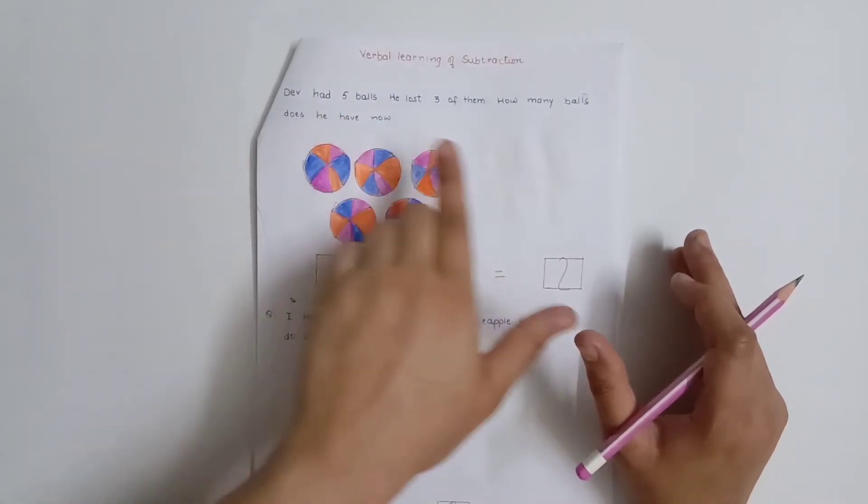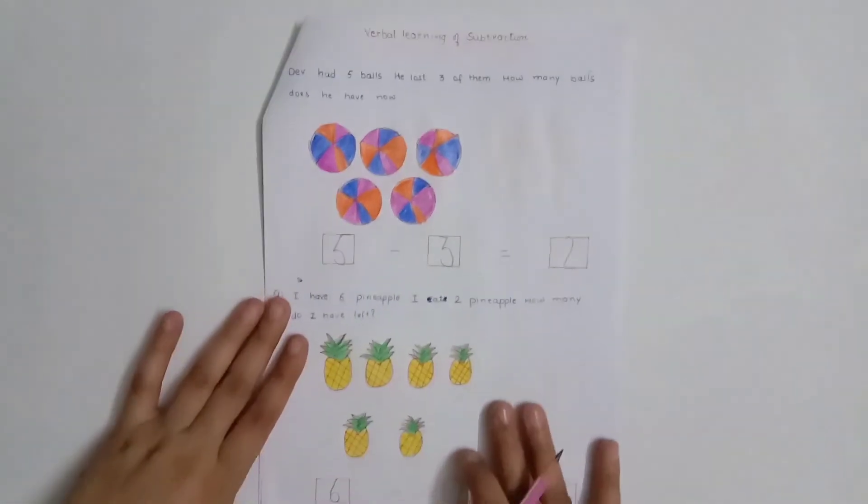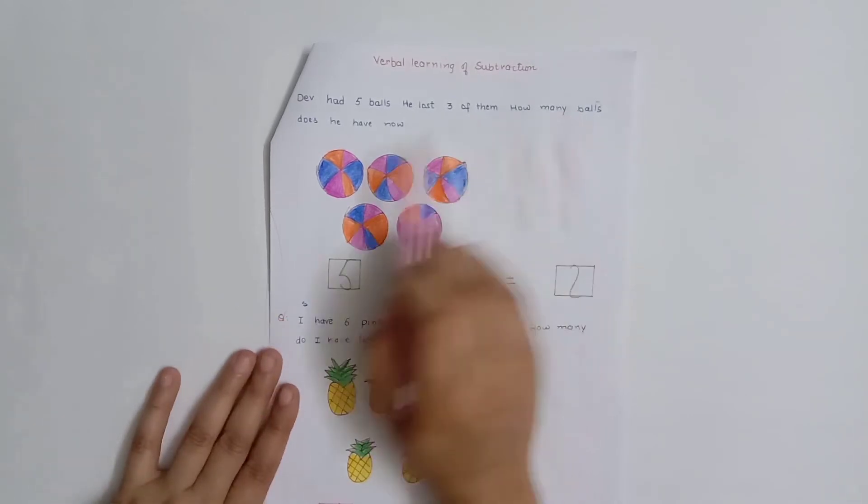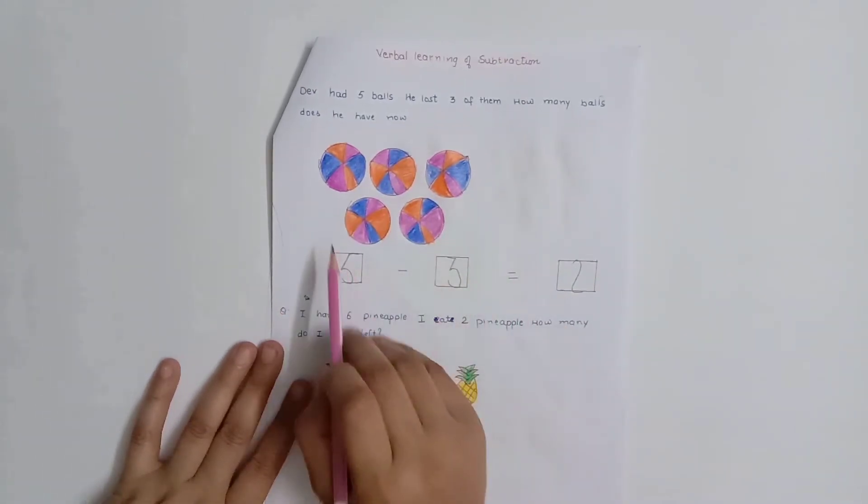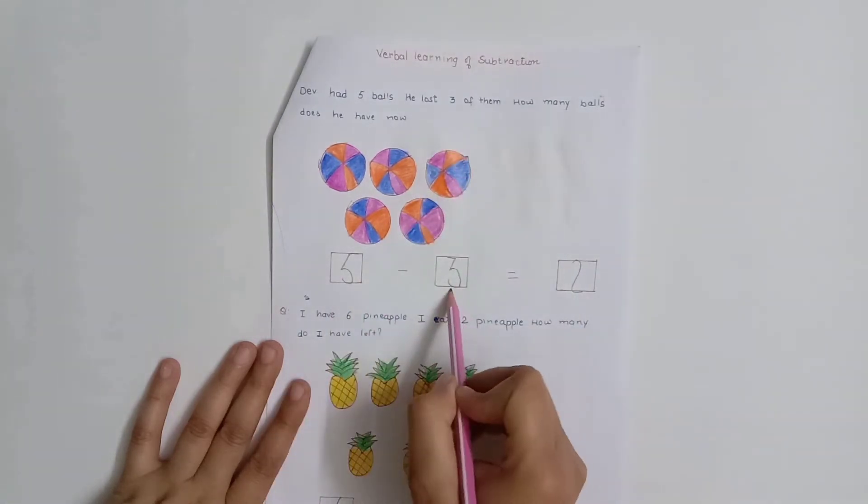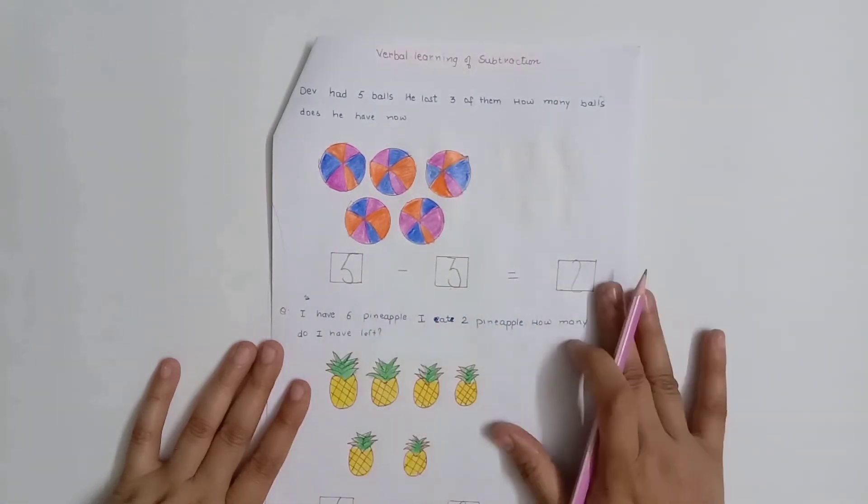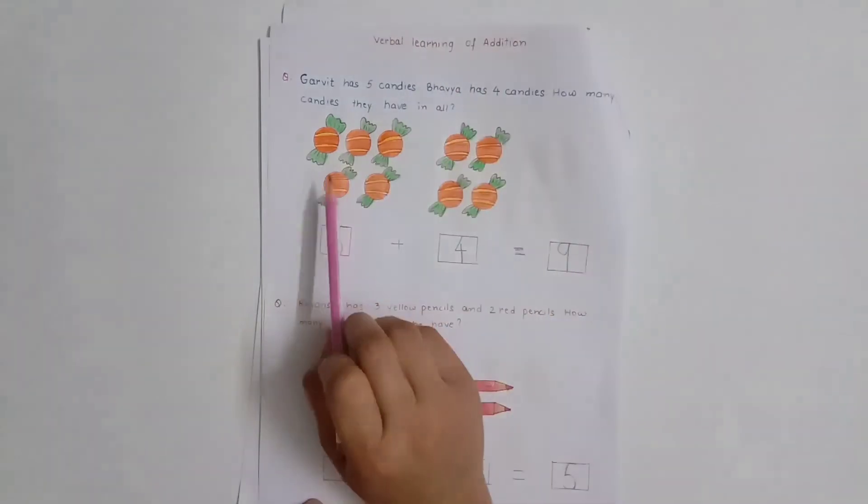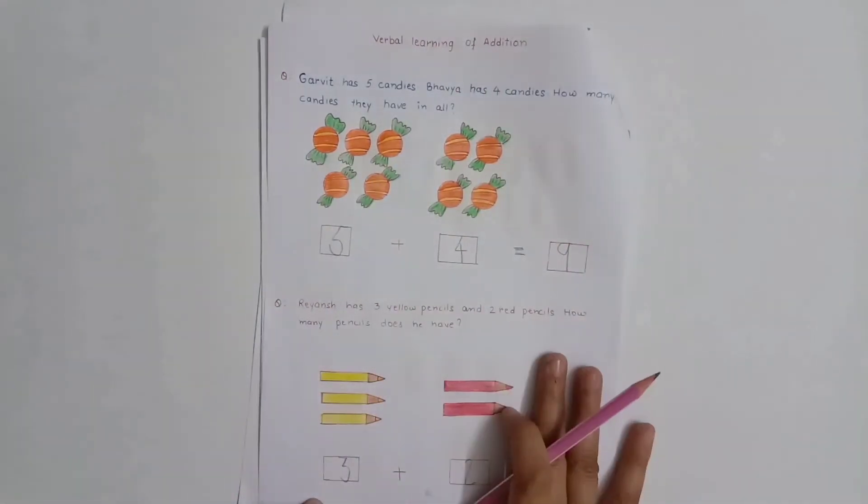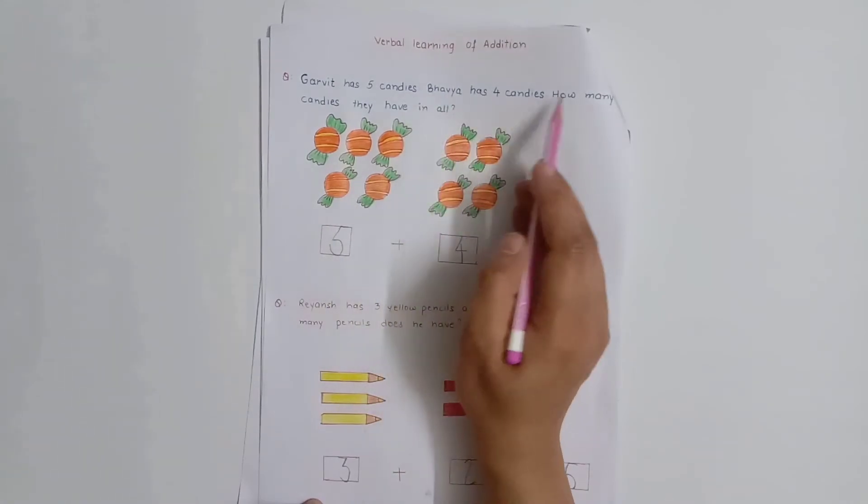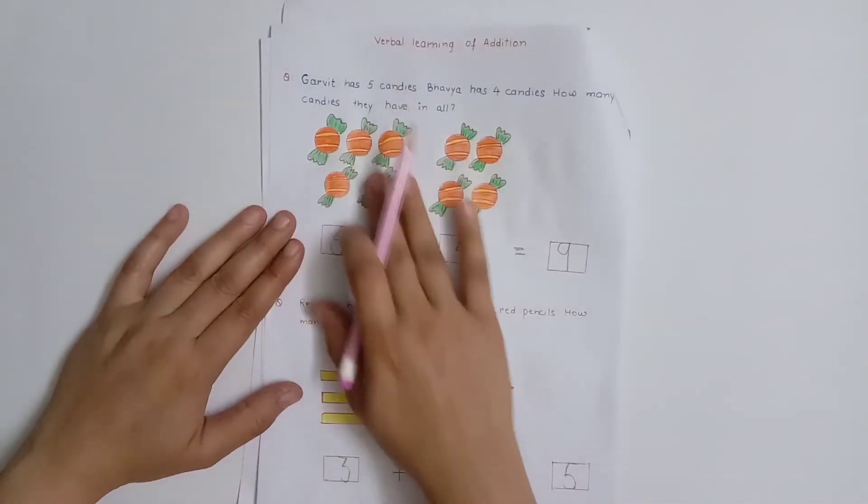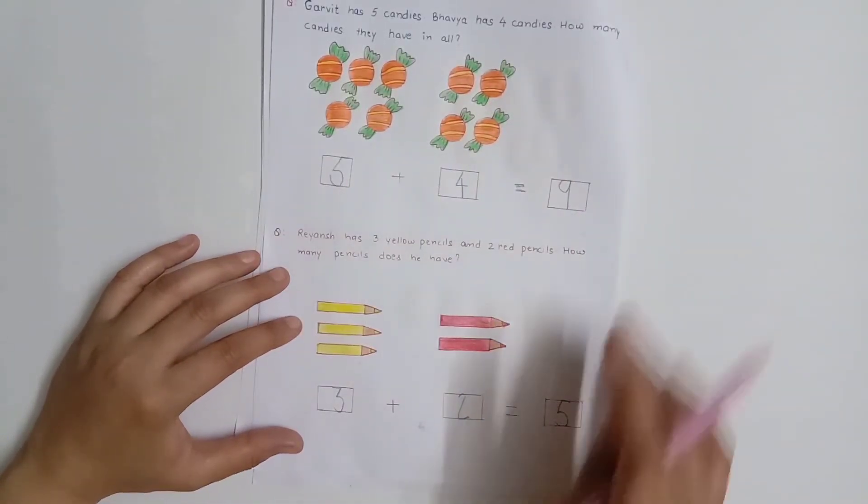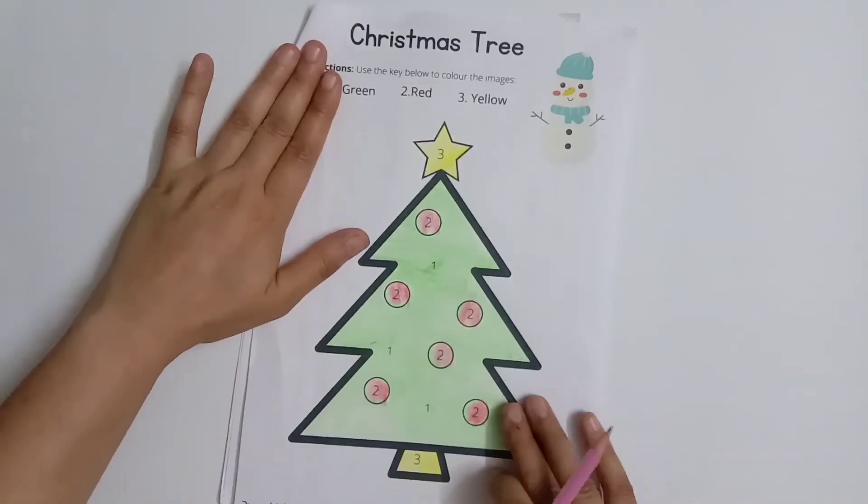So after this, I have written here problem statements like 'Rahul had 5 balls, he lost 3 of them.' After this, our next worksheet is again a math worksheet of verbal learning of addition. Here I have shown some pictures and Amish has to solve the problem - for example, how many candies they have in all.